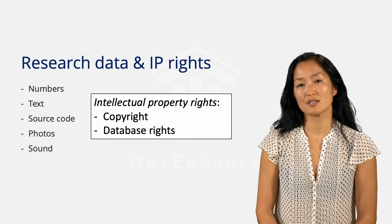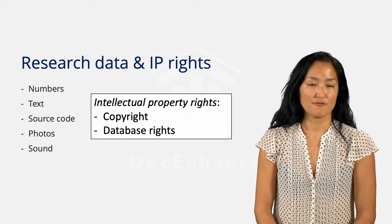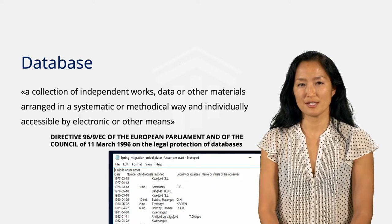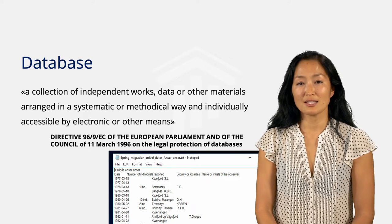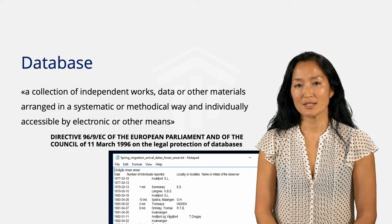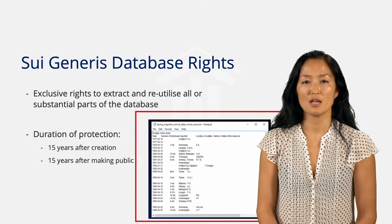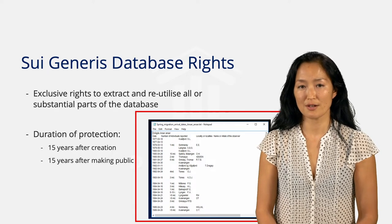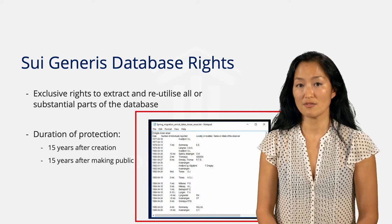Copyright protects original creative works, and countries differ as to what works are considered sufficiently creative in order to qualify for protection. Research data in the form of text, images, maps, and source code may be protected by copyright. Quite often research data are organized as compilations of data entries — this is where the legal term 'database' may become relevant. A database in legal terms is a collection of independent works, data, or other materials, arranged in a systematic or methodical way and individually accessible by electronic or other means. In the European Union and some other countries such as Norway, special database rights are granted to someone who has made a substantial investment to obtain, verify, and present data in a database. It is the arrangement that is protected by database rights, not the individual data entries.